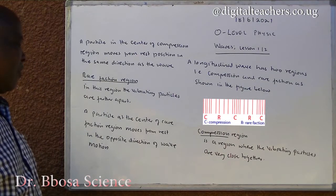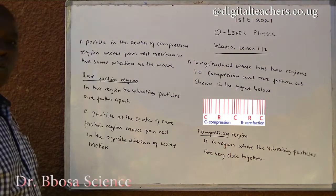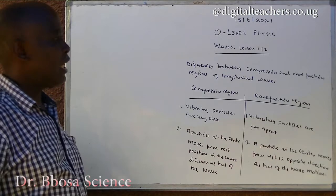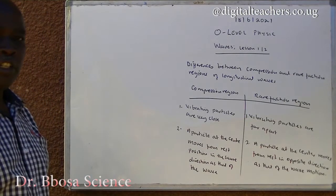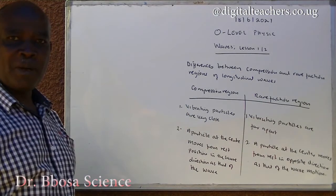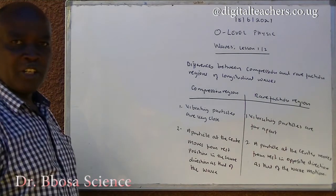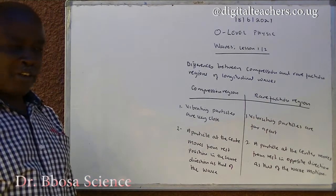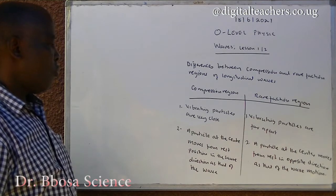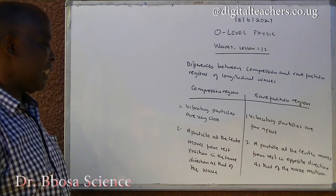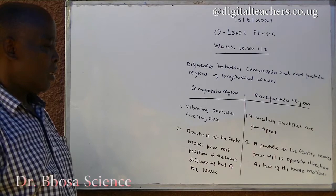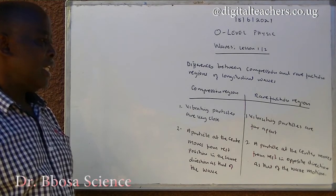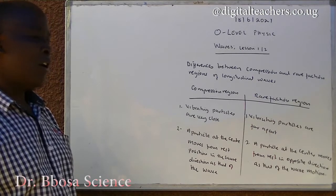A particle in the center of compression region moves from rest position in the same direction as the wave. Rarefaction region: in this region, the vibrating particles are further apart. A particle at the center of rarefaction region moves from rest in the opposite direction of the wave motion. In compression region the vibrating particles are very close. In rarefaction region the vibrating particles are further apart. In compression region a particle at the center moves from rest position in the same direction as that of the wave. In rarefaction region a particle at the center moves from rest in the opposite direction as that of the wave.